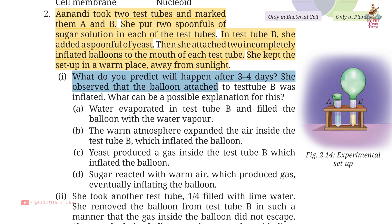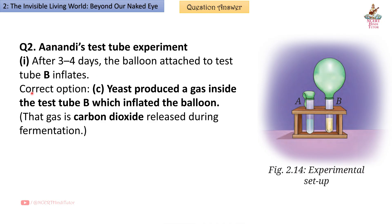First — what do you predict will happen after three to four days? She observed that the balloon attached to test tube B was inflated. Answer: Correct option C — yeast produced a gas inside test tube B which inflated the balloon.